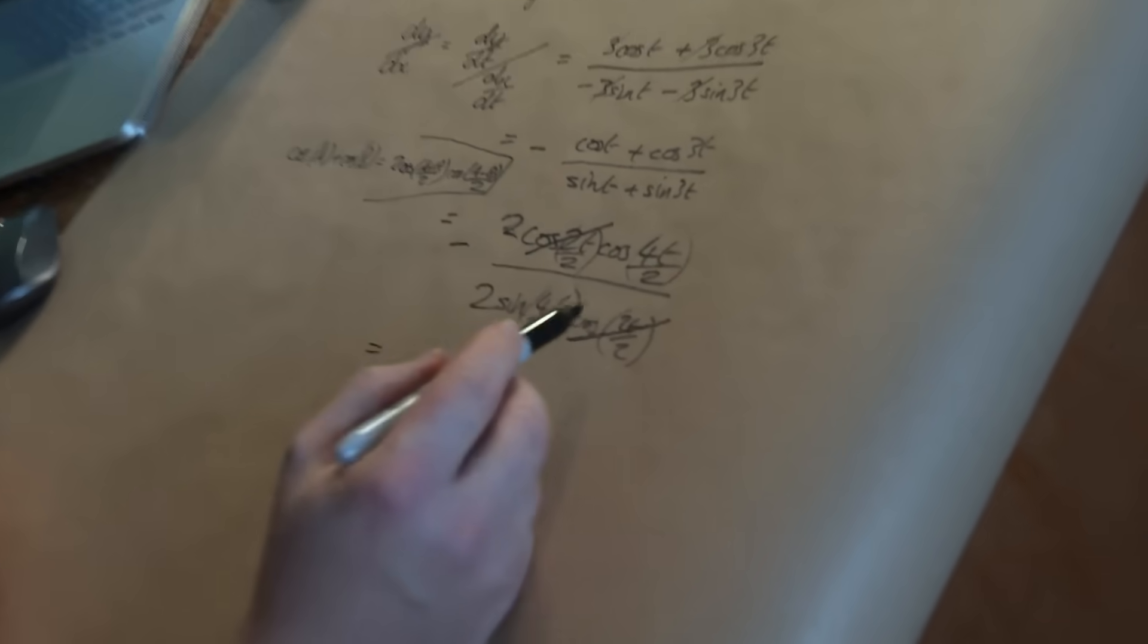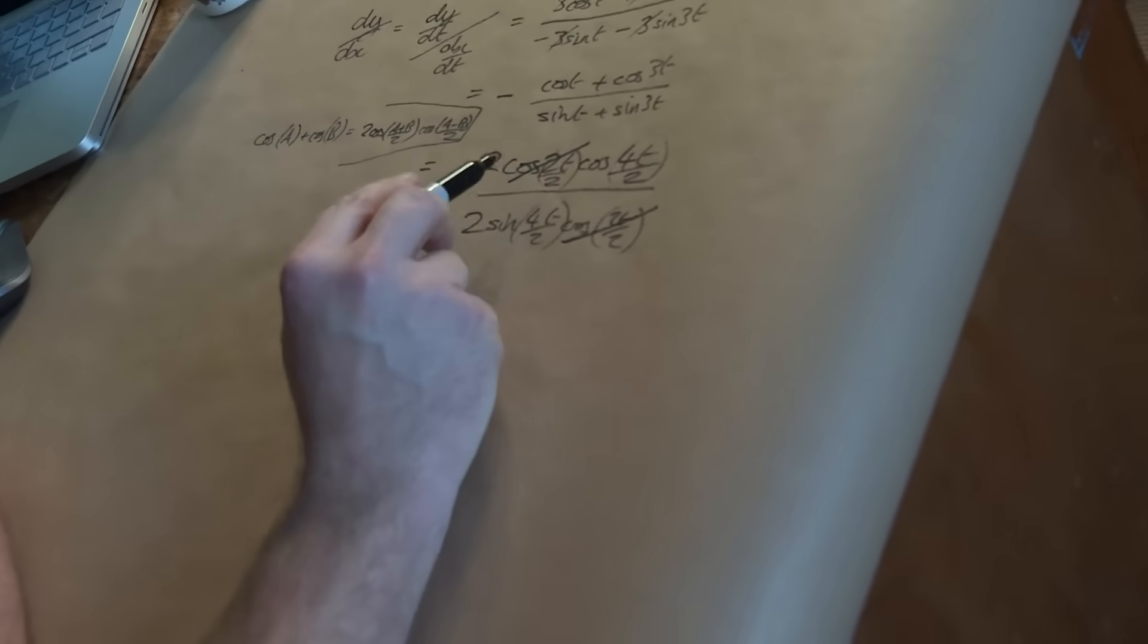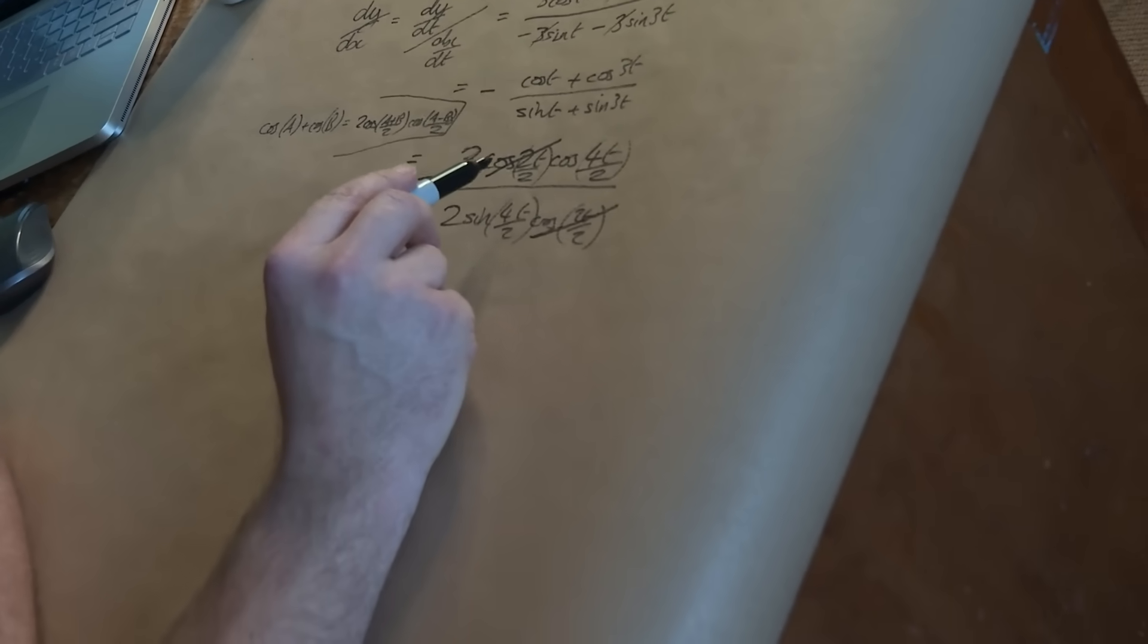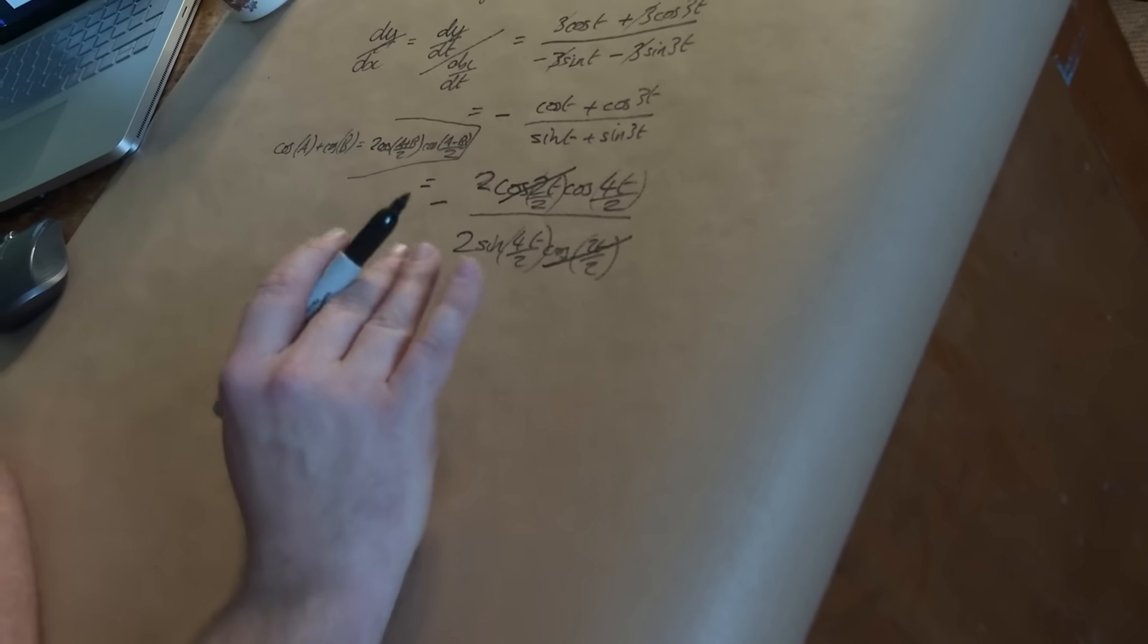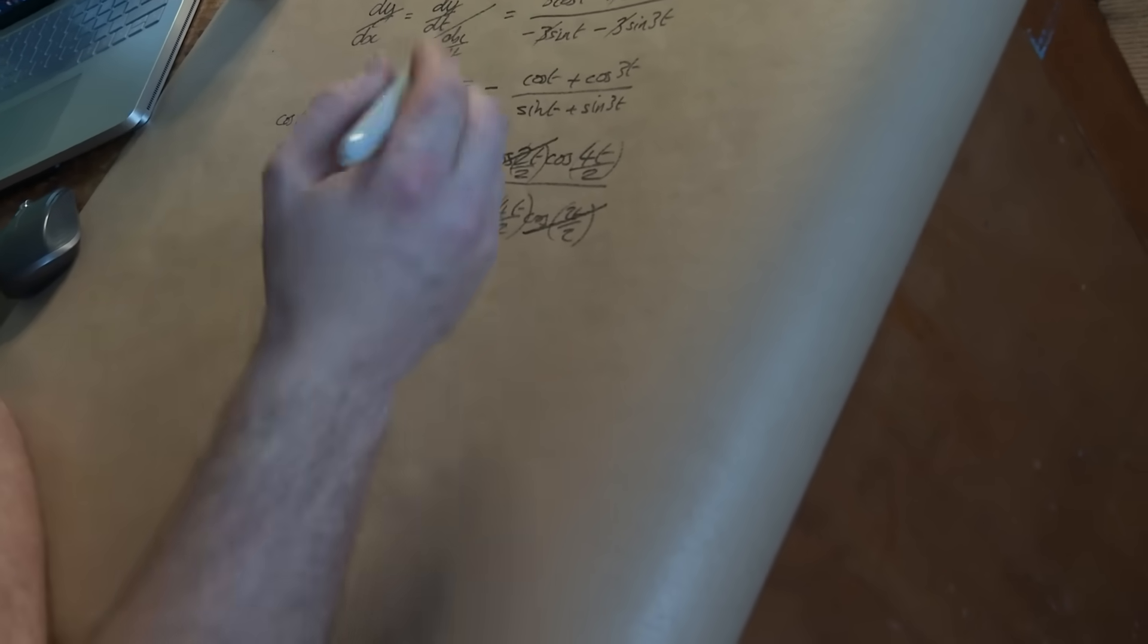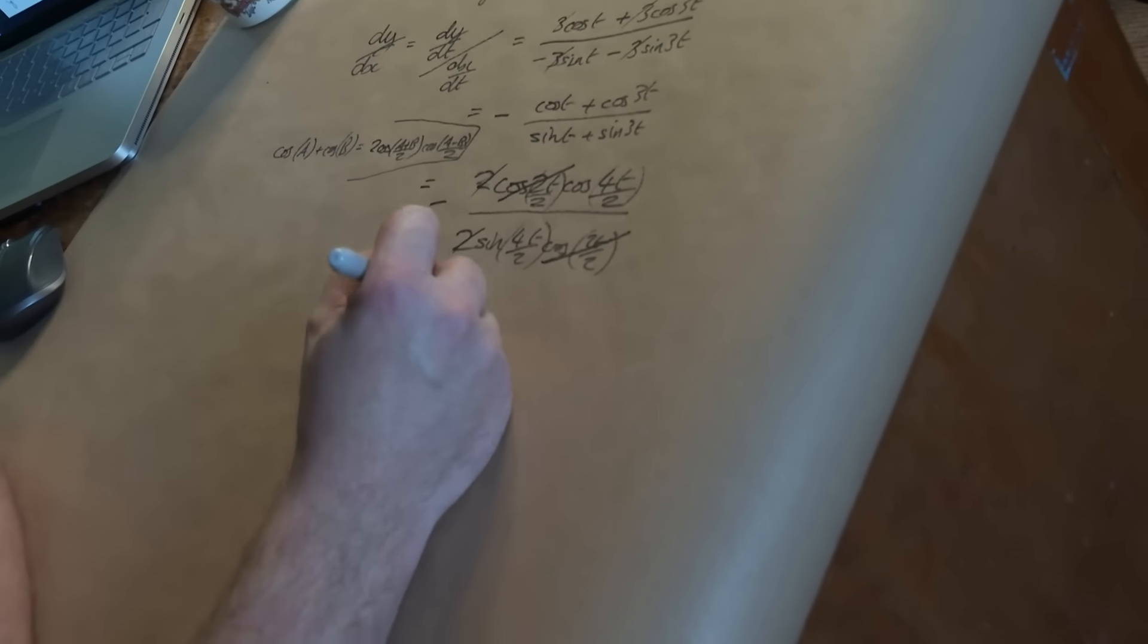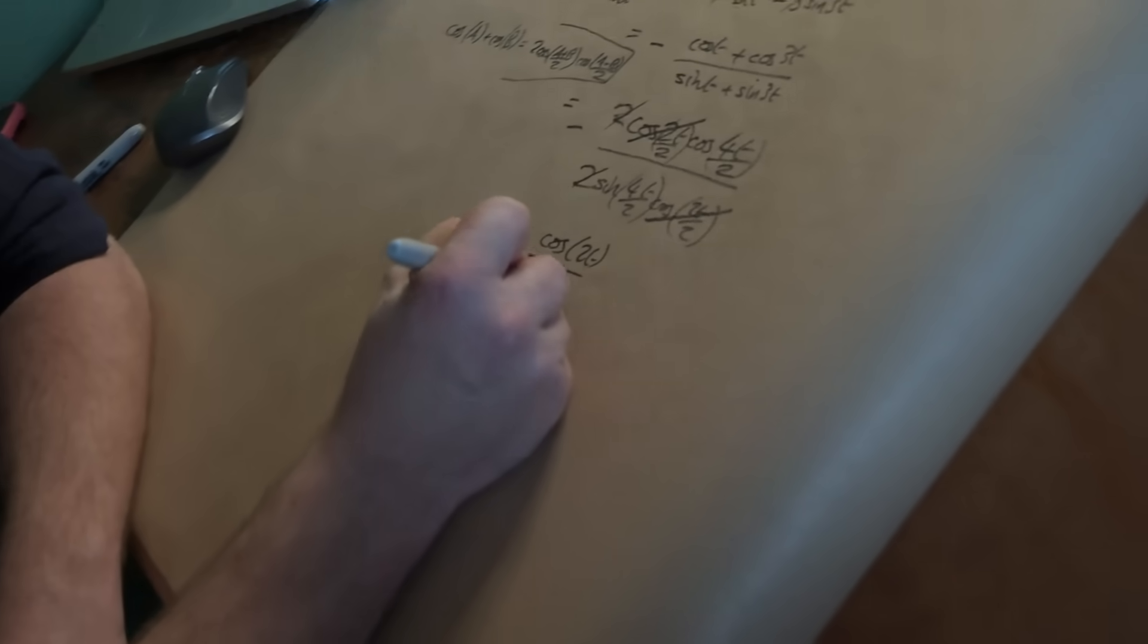A bunch of stuff cancelled. I should check that actually I'm dividing by cosine to cancel this out. I should check that that's not zero. It's fine. You can go and check whether you agree. I end up with the 2's cancelling as well. I've got negative cos of 2t over sine of 2t. I'll just leave it as that. Cos of 2t over sine of 2t. This is the gradient